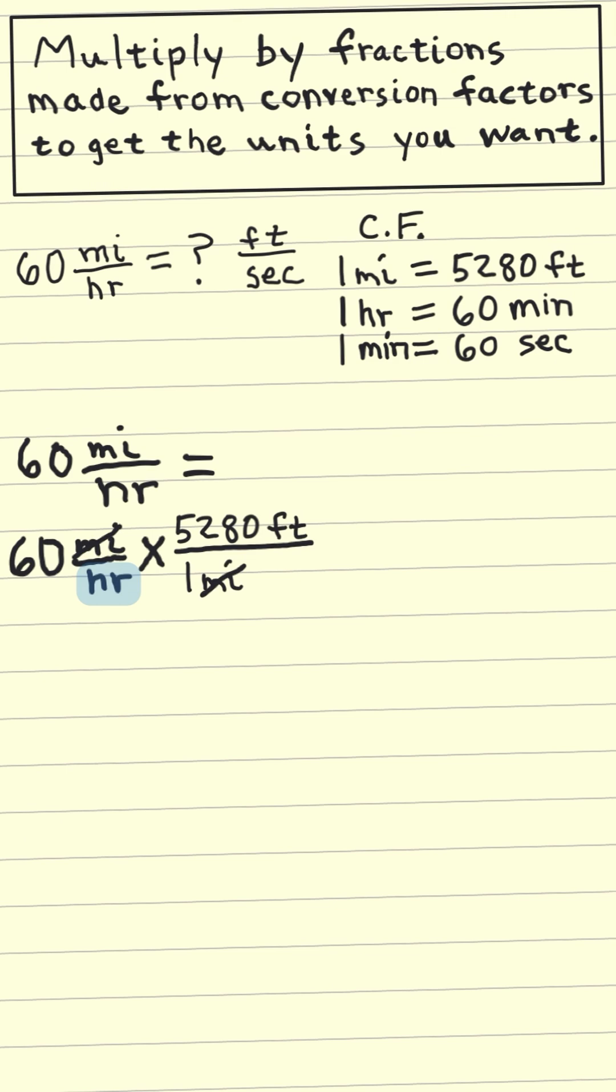Then to get rid of the hours on the bottom, we'll use this conversion factor and bring hours to the top and minutes to the bottom. The hours cancel out and we're left with minutes.